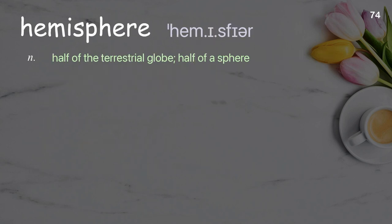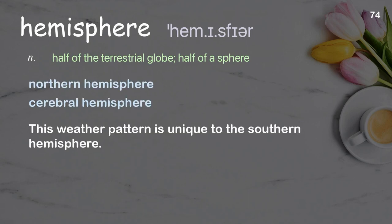Hemisphere. Half of the terrestrial globe; half of a sphere. Examples: Northern Hemisphere, Cerebral Hemisphere. This weather pattern is unique to the Southern Hemisphere.